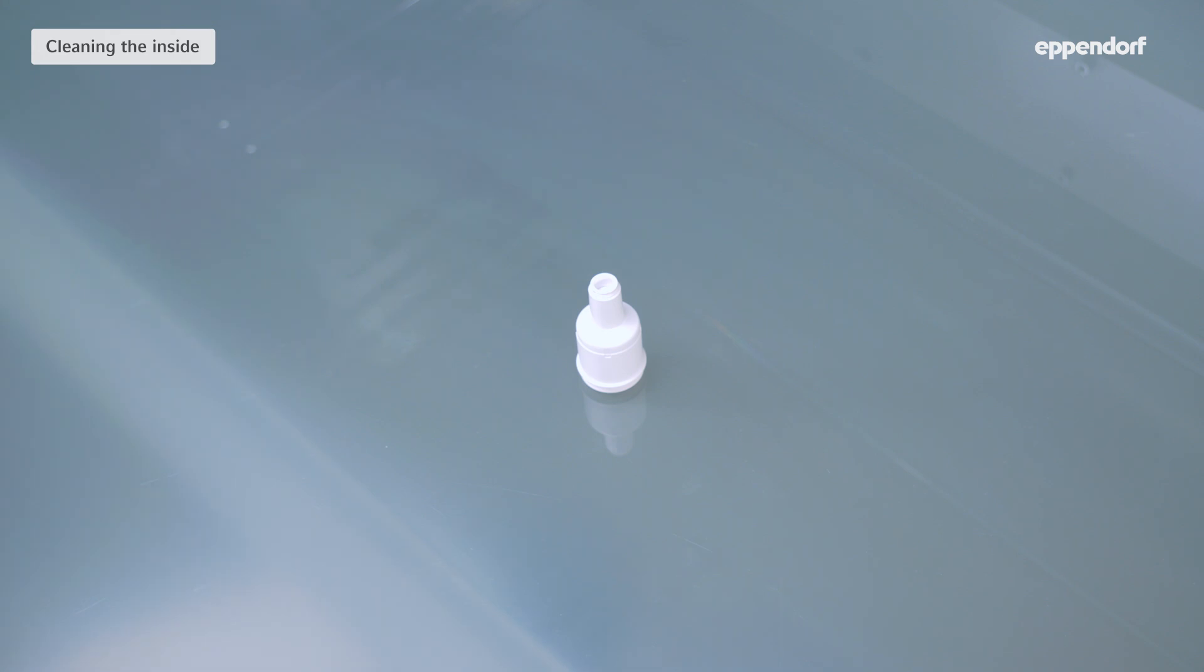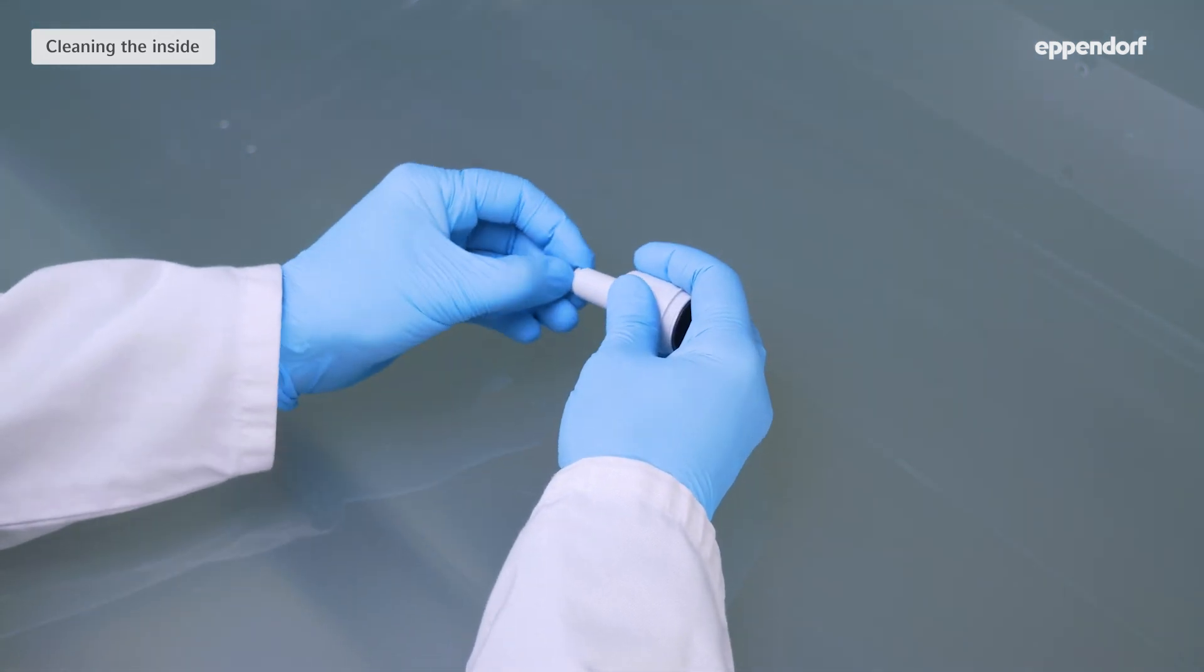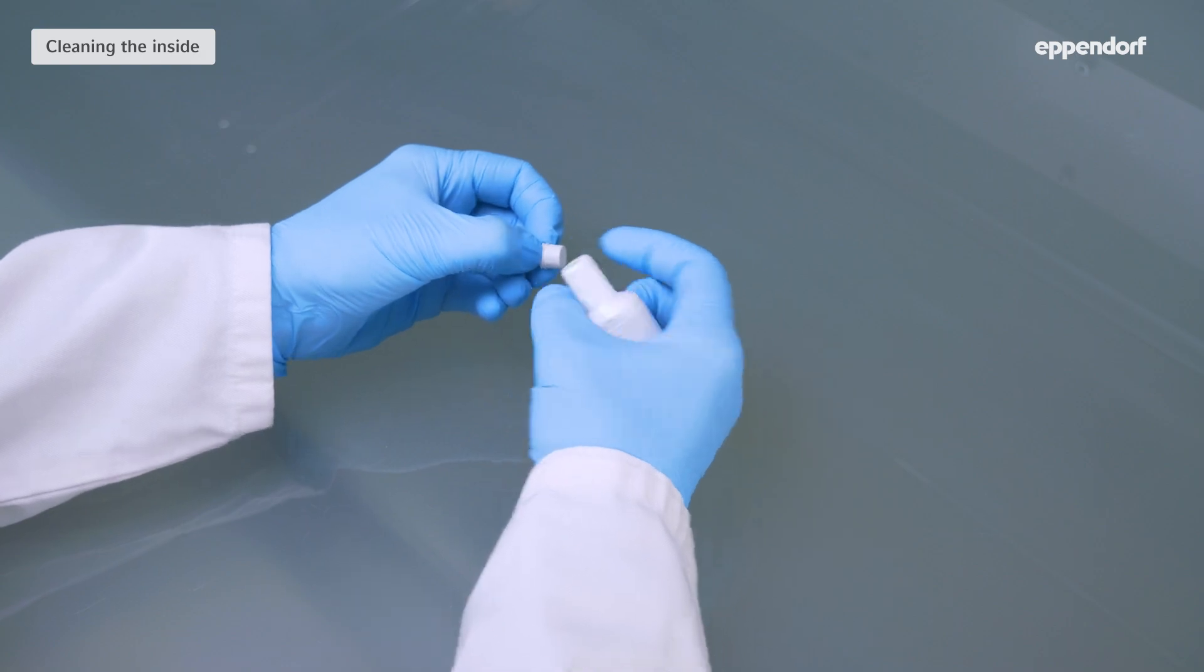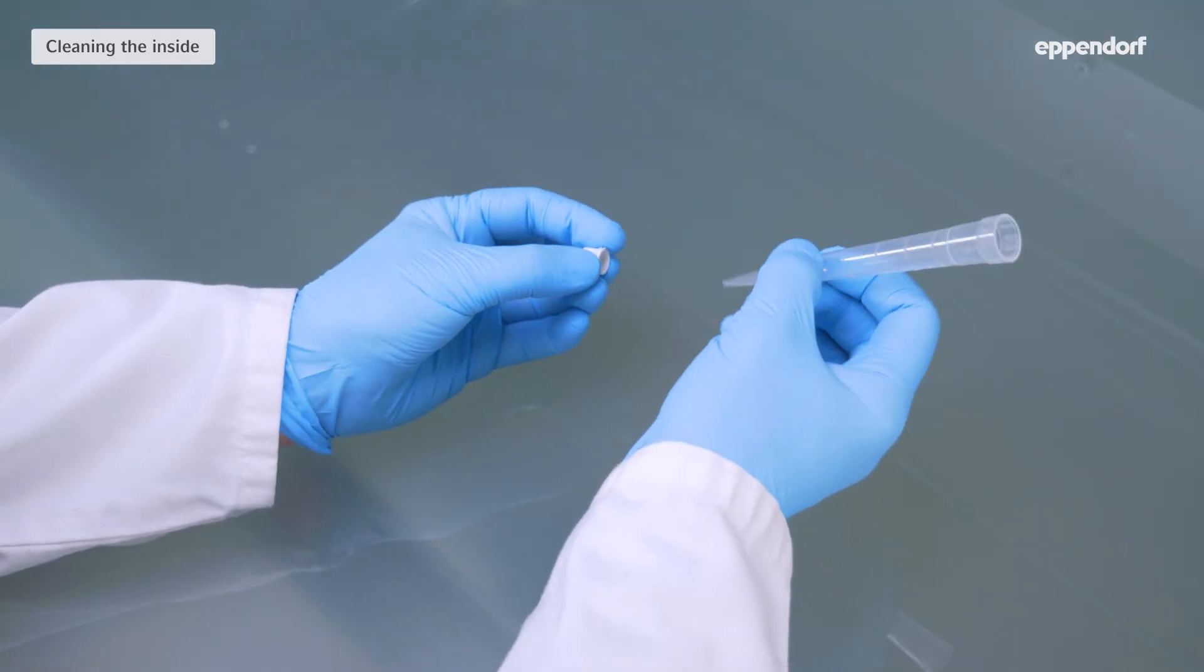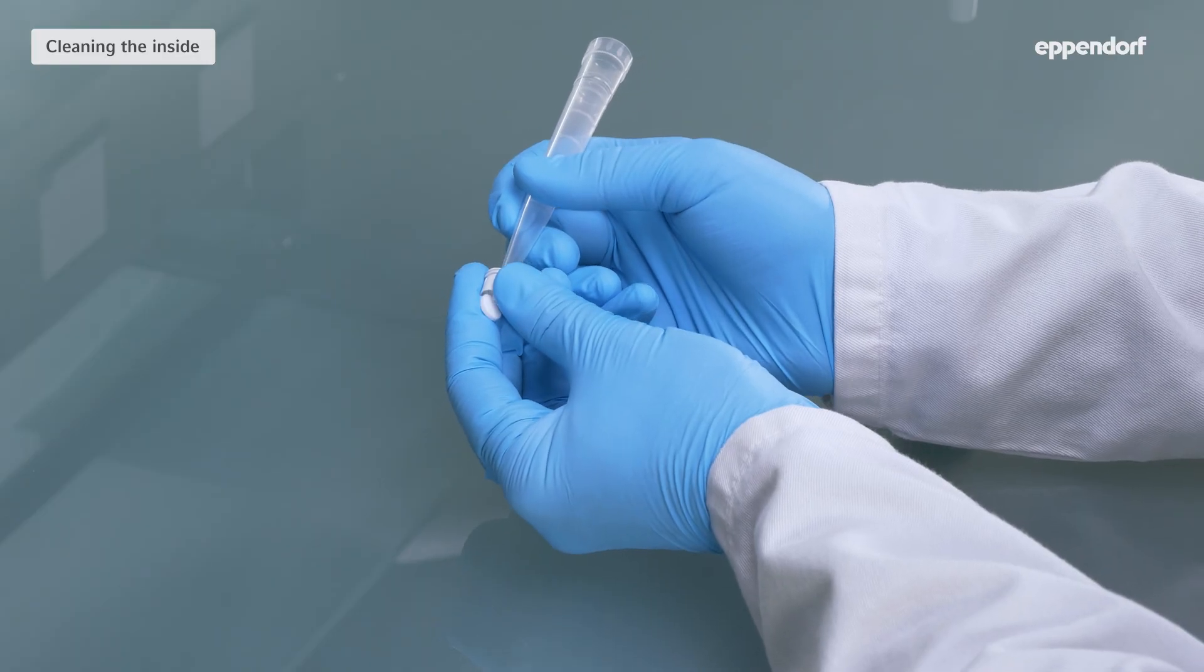Before cleaning the lower parts of large volume pipettes, you need to remove the protection filter. Pull out the filter sleeve, push out the protection filter with a pipette tip and clean the filter sleeve.